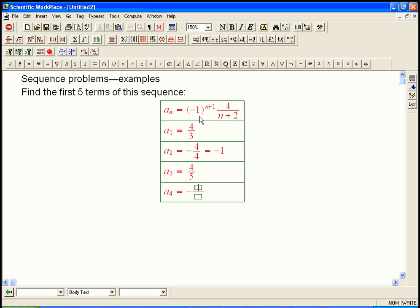Either a minus one to the n or a minus one to the n plus one is an alternating sign sequence. Here four plus two is six, so that simplifies a little bit. And a five, he's going to be back to plus four, and then over seven, that doesn't simplify.